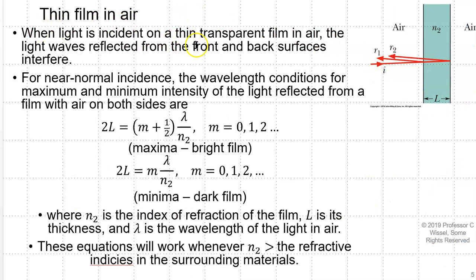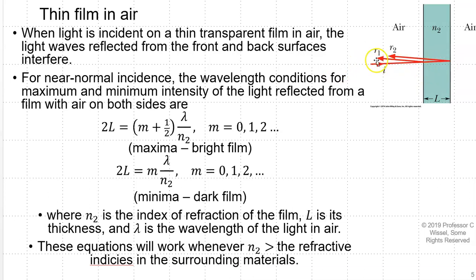When light is incident on a thin transparent film in air, the light waves get reflected from the front and back surfaces and they can then interfere. Here's a picture of this: we have an incident ray coming in — some of it gets reflected off the first surface, and the stuff that goes through gets reflected off the back surface.